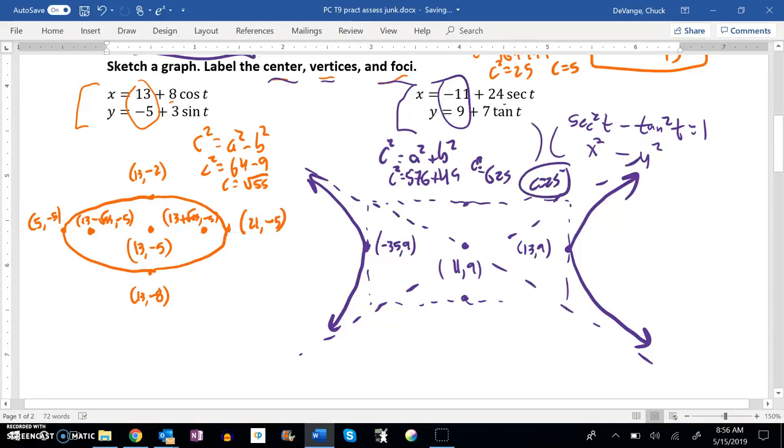So that distance would be 25. So if I go 25 in this direction and 25 in this direction, it puts me out here at 14, 9. And then put me back here at negative 36, 9. There she goes.